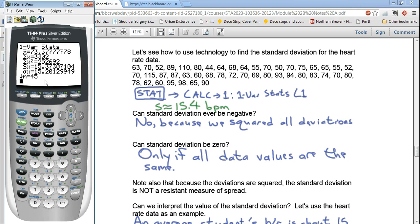So the next one is N, and that's the sample size. And for my class, I had 45 students who reported heart rates. So N was 45, and then I pressed the down arrow, and the minimum value, the lowest heart rate, was 44.